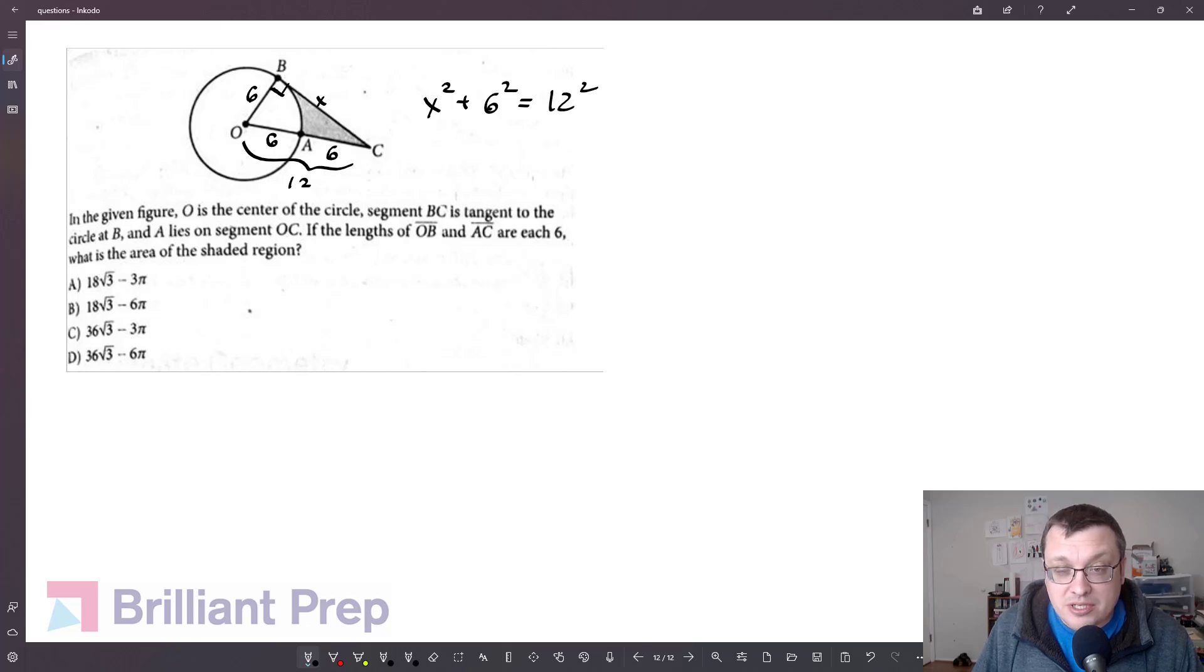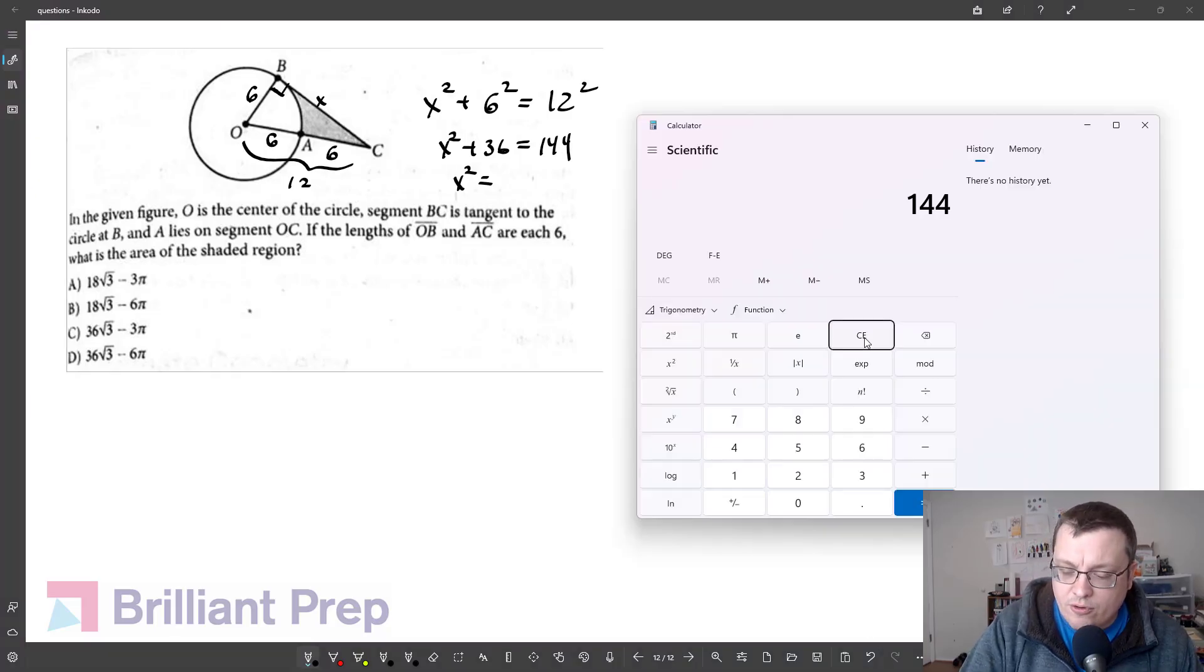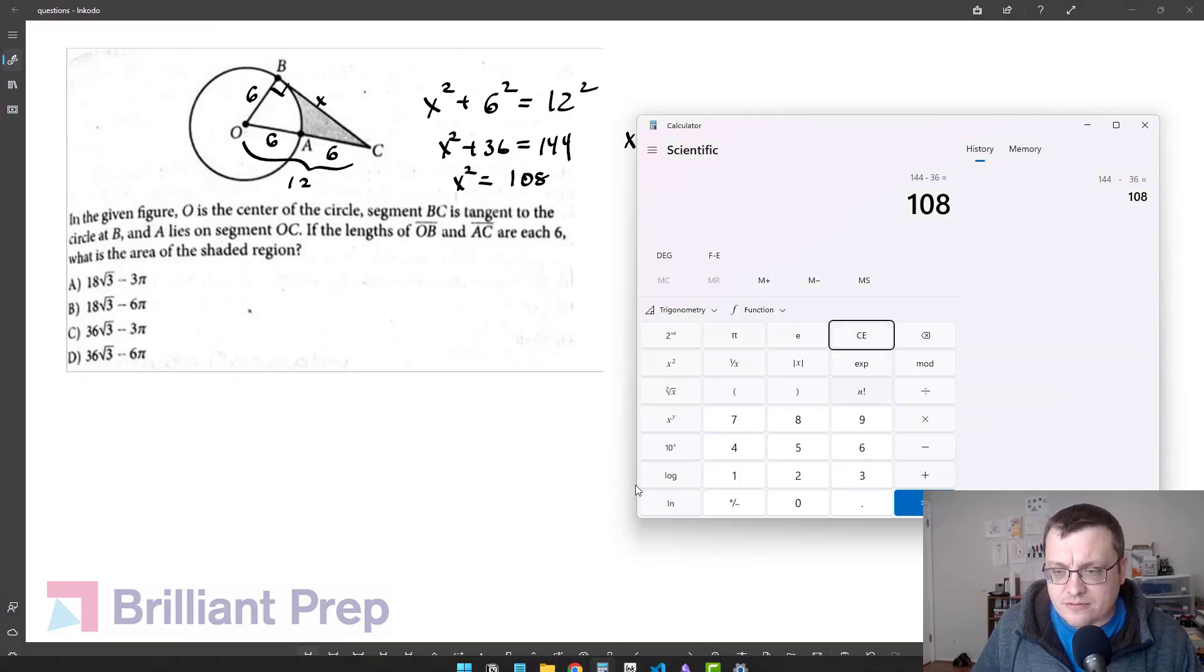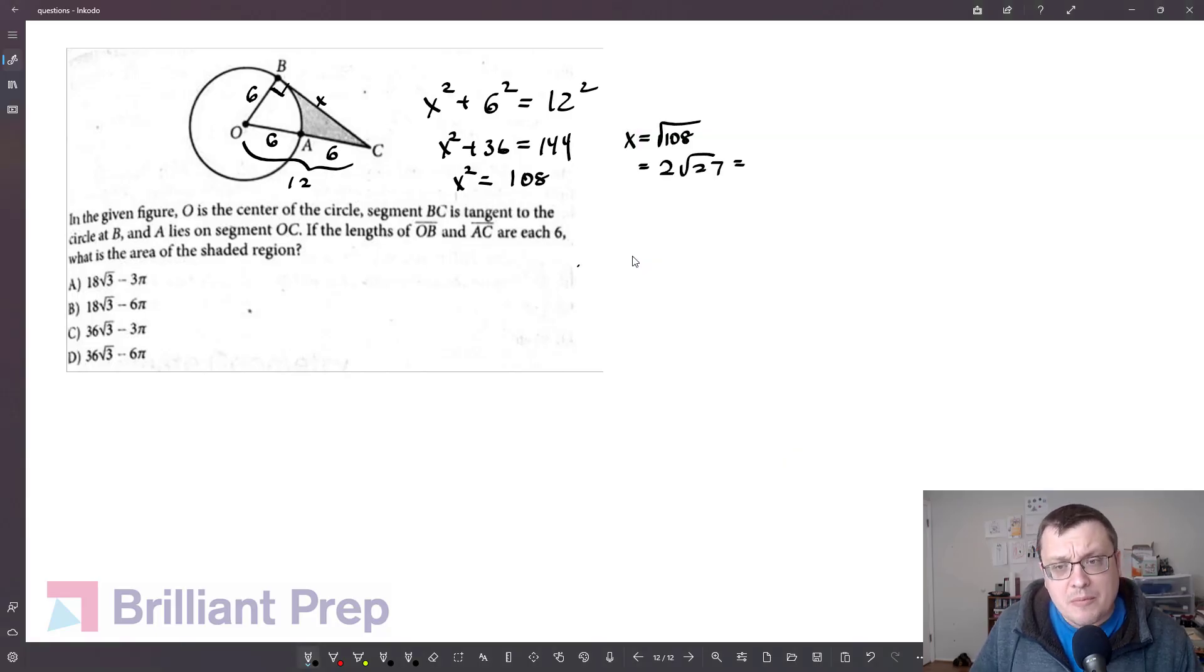So it should be X squared plus 6 squared is equal to 12 squared. So X squared plus 36 is equal to 144. So X squared is equal to 144 minus 36. So 144 minus 36 is 108. So X will be the square root of 108. And so if we simplify this a little bit, I can pull a 2 out, so it's 2 radical 27. But there's also a factor of 9 in that 27 that I can take the square root of, so another 3 comes out. We should end up with 6 radical 3, which makes sense if you see this as a 30-60-90 triangle, because I've got one leg, which is half the hypotenuse, and that tells me I've got a 30-60-90, and so it makes sense that the other side would be 6 radical 3.